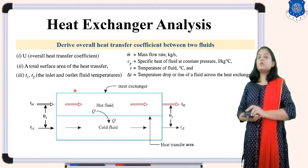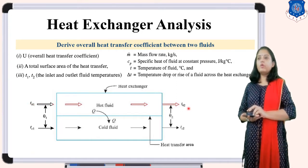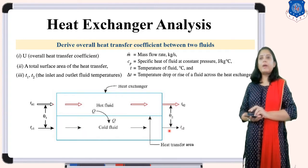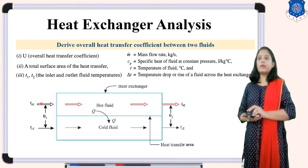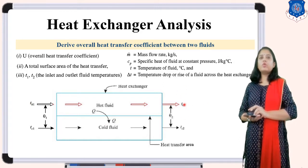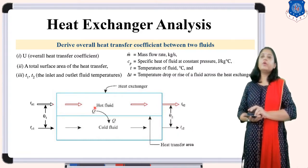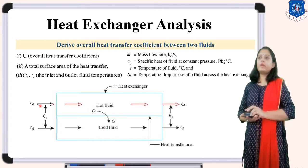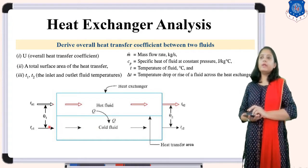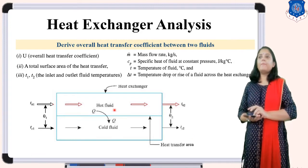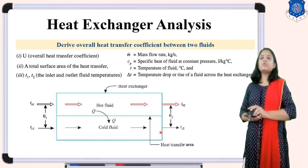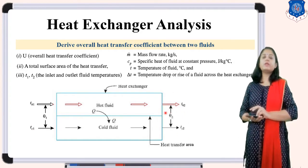Here is the figure of the heat exchanger. Hot fluid flows in one direction and cold fluid flows in the same direction, so it is called a parallel flow heat exchanger. At entry, the hot fluid temperature is TH1, and at exit it is TH2. For cold fluid, the entry temperature is TC1 and exit temperature is TC2. Heat is transferred from hot to cold fluid, so hot fluid temperature decreases from TH1 to TH2, and cold fluid temperature increases from TC1 to TC2. At entry, the temperature difference is theta1 = TH1 - TC1, and at exit it is theta2 = TH2 - TC2.